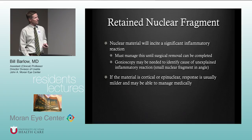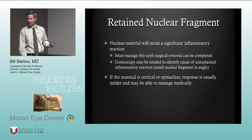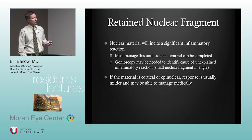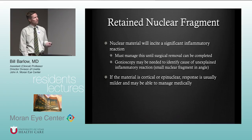If retained nuclear fragments are the cause of elevated IOP, nuclear material will incite a significant inflammatory reaction and IOP spikes. Manage with aqueous suppressants and frequent steroids until it can be removed surgically. You may need gonioscopy to identify an unexplained IOP spike — look for a small nuclear fragment in the angle. If the material is cortical or epinuclear, the response is usually milder and the body may clear it. More significant amounts may require surgical removal.